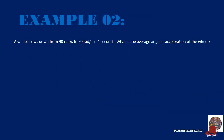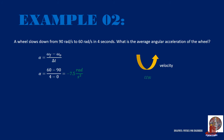Example 2: A wheel slows down from 90 radians per second to 60 radians per second in 4 seconds. What is the average angular acceleration of the wheel? Using the same formula, alpha equals (final omega minus initial omega) over delta t, we plug in (60 minus 90) over (4 minus 0), giving negative 7.5 radians per square second. The velocity of 60 radians per second is counterclockwise as it is positive, but the acceleration is negative, making it clockwise, which slows down the speed.